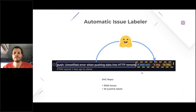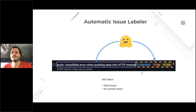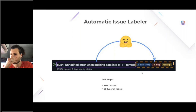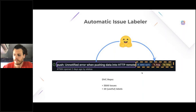The idea I wanted to showcase in this project was a prototype for an automatic issue labeler. I work on the DVC repo and we have a lot of issues being opened every day, and we have to manually assign labels to triage and organize them. So it sounded like a cool project to have a machine learning model that takes the issue title as an input and can predict one of the labels that we use to categorize the issues.